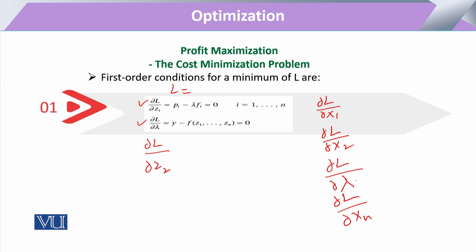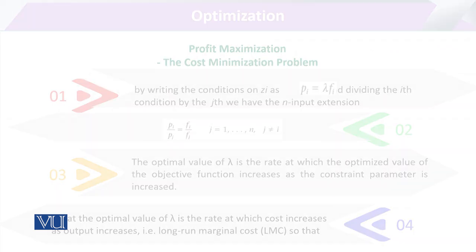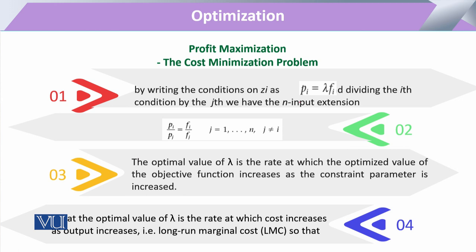Taking out the first derivative, it will be equal to Pi minus lambda times the first derivative of the cost function. When we have taken this cost function in the form of W1 X1 and W2 X2, we will see that it will be equal to W1 minus lambda times the first derivative. Here it will be equal to W2 minus lambda times the first derivative. But for lambda, it will be equal to Y minus F of Z1. I hope you will not mix this Pi with the price of the output; in other words, we can say this is equal to W1 equals lambda times Fi.